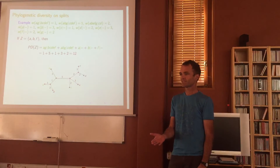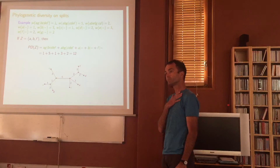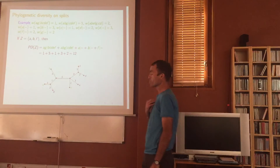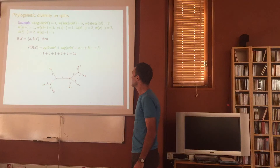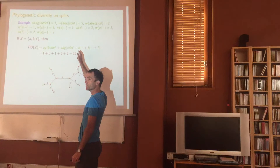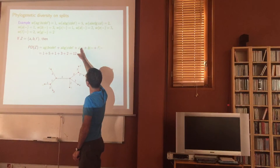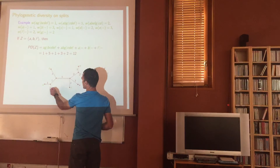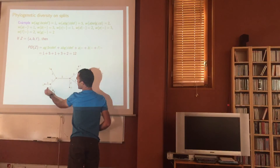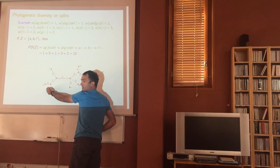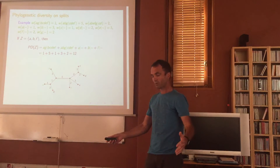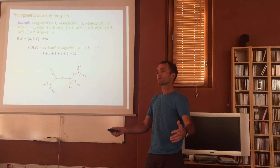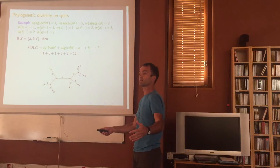The reason this works is because the underlying structure is a greedoid. Greedoids are very much like matroids except you don't have the hereditary property of all subsets. In matroids, if you have an independent set, all its subsets are also independent. The analogue in greedoids is feasible sets: if I've got a feasible set, there is an element I can remove and it stays feasible. I can't guarantee all subsets are feasible, but I can always remove one element at a time and get a smaller feasible set.